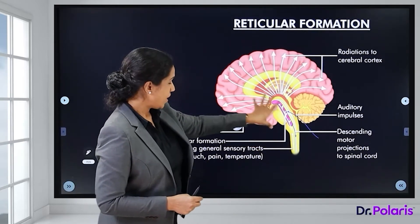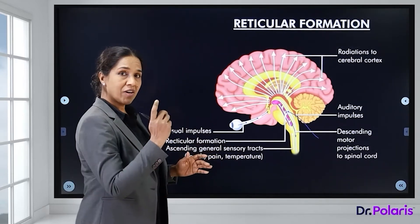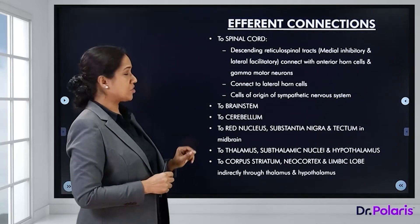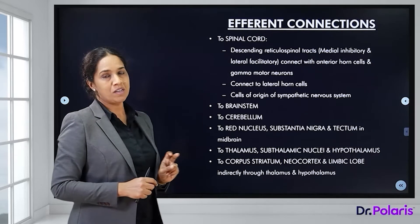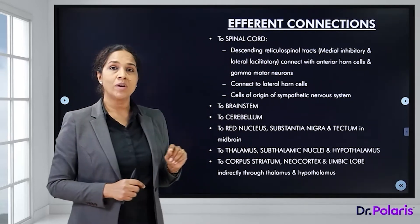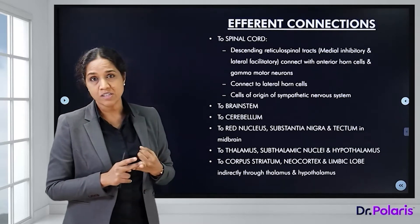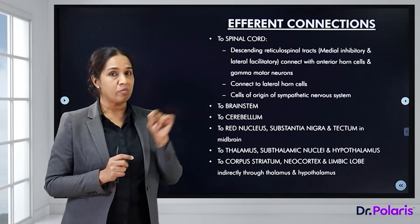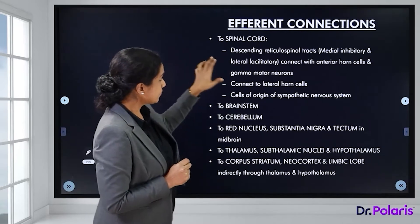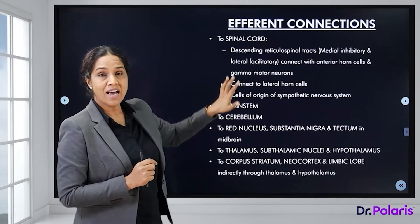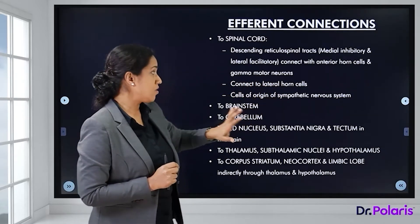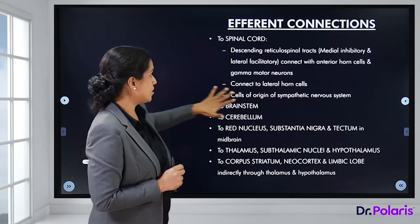The efferent connections of the reticular formation: it sends efferent fibers to the spinal cord in the form of the descending reticulospinal tract, which has two divisions — the medial reticulospinal tract and the lateral reticulospinal tract. The medial reticulospinal tract is inhibitory and the lateral reticulospinal tract is facilitatory, connecting the reticular formation with the anterior horn cells and the gamma motor neurons.